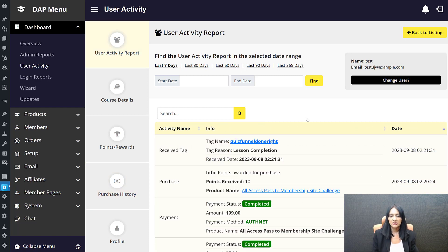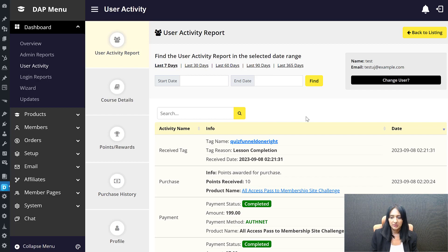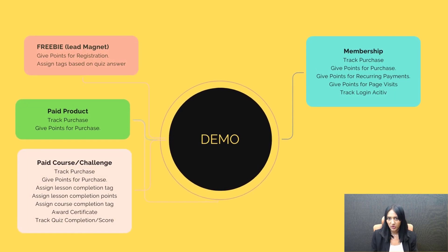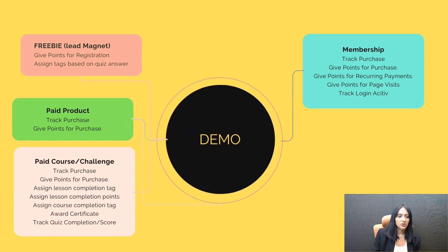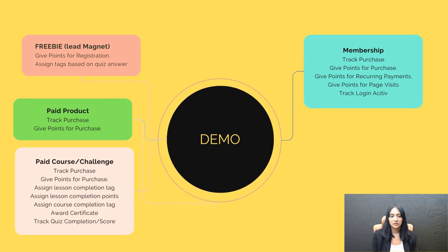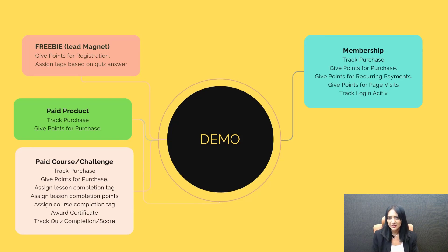I'm going to show you a specific use case to demonstrate exactly how this works. You can use DAP for all of your products, courses, and services. For this example, I'll use four product types: a free product, a paid digital product download, a paid online course, and a membership. I'll show you how to track the user journey across all four, and you can apply the same approach in your own membership site.